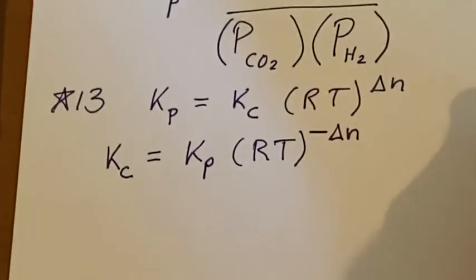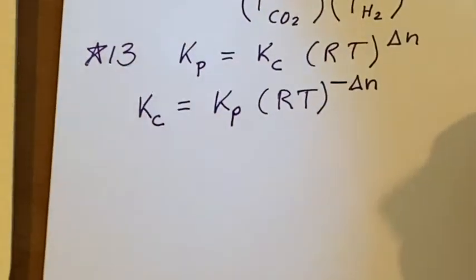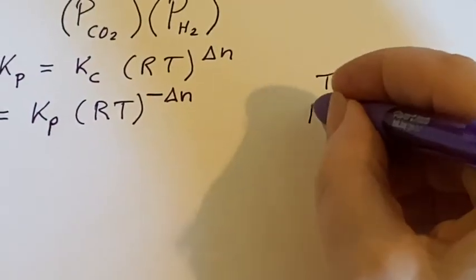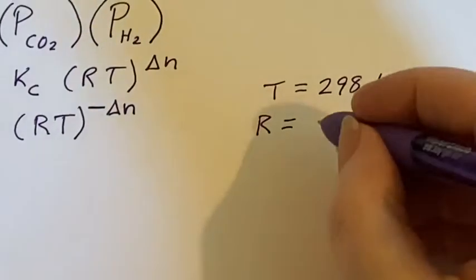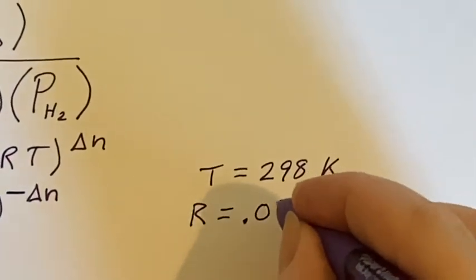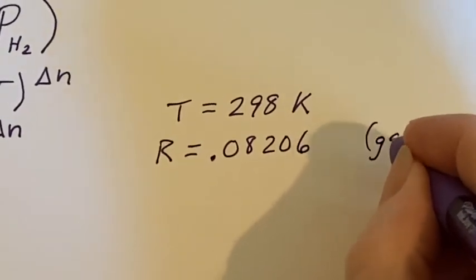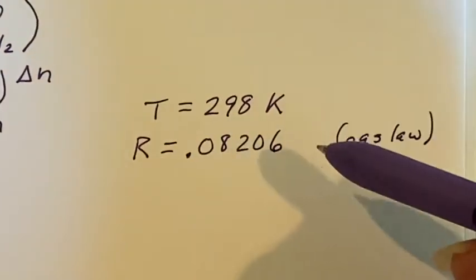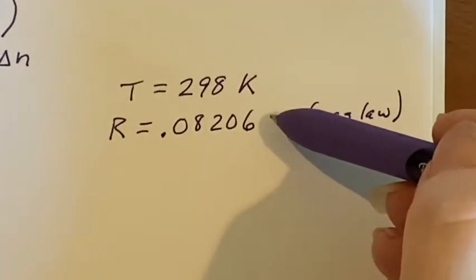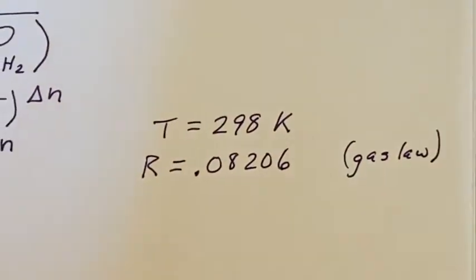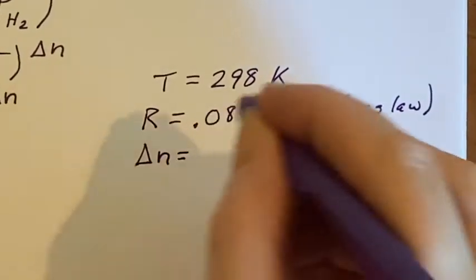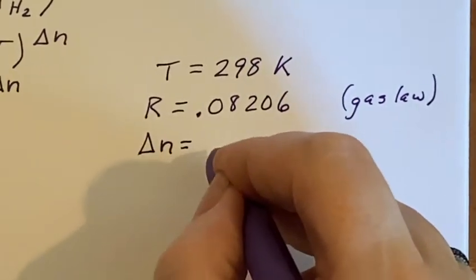We know what T is. T is 298 Kelvin. R will have to be the gas law version. So that's the 0.08206 from the gas laws. We're doing equilibrium constants so I don't need to know that this is liter atmosphere per mole Kelvin. And what would delta N be? Remember that's the change in the number of gases.